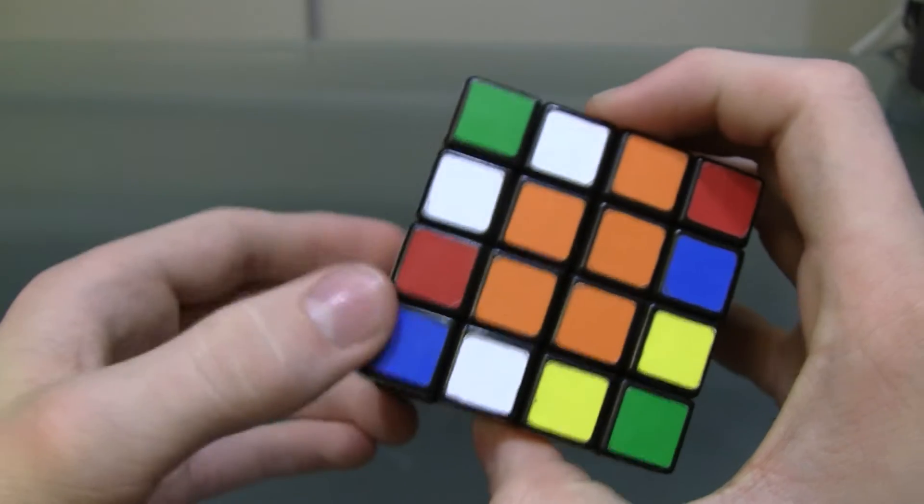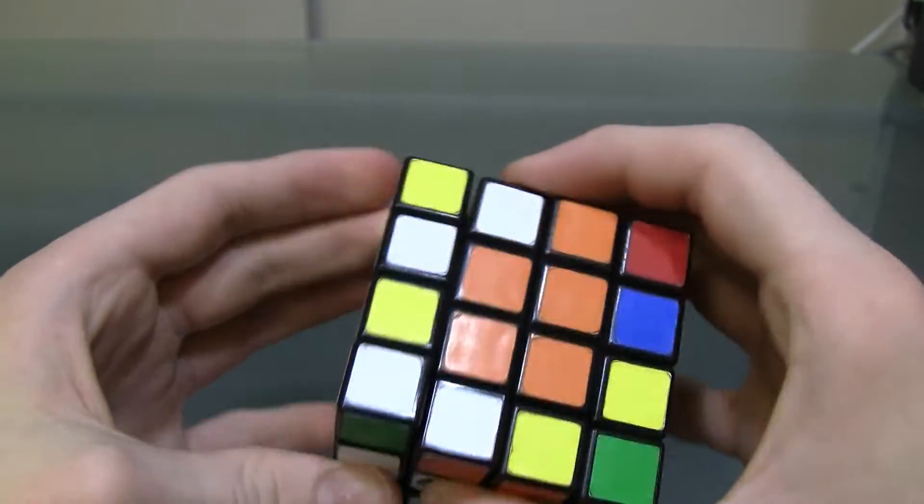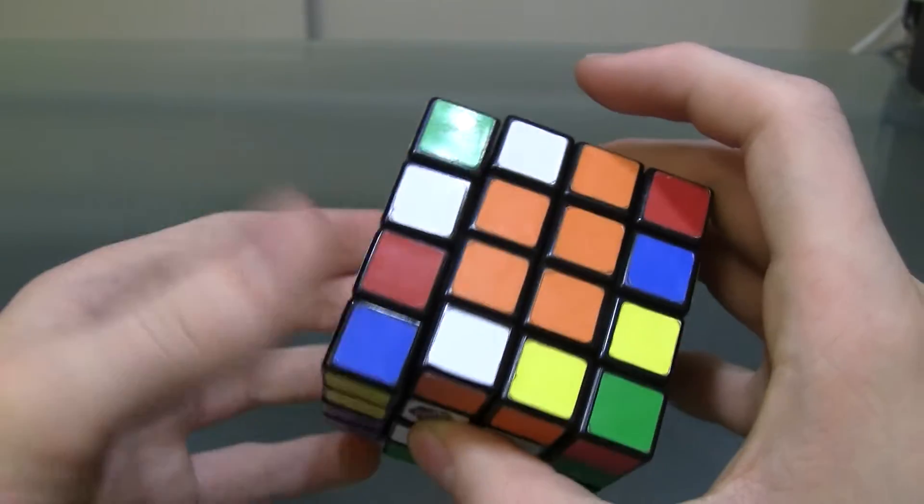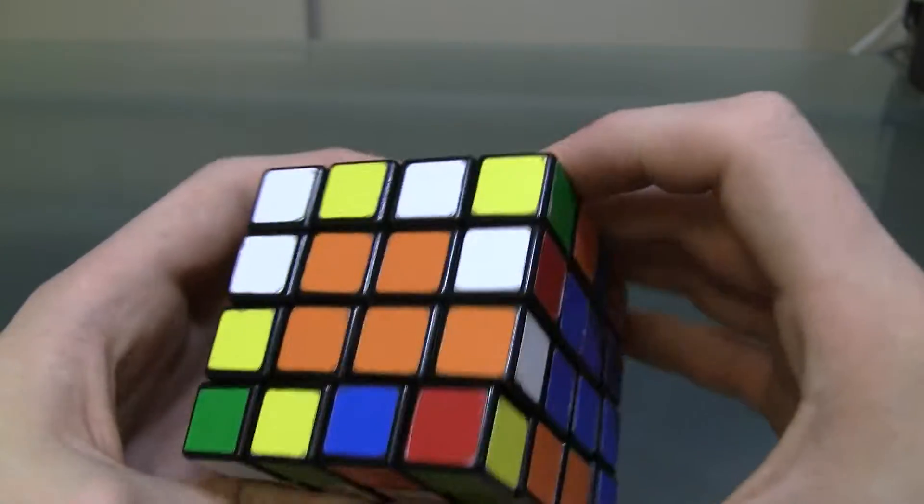So, to fix that, you need to bring this edge piece out of place. By bringing it either down... Yeah, you have to bring it down, because if you bring it up, then it's in the same layer again. So, you have to bring it down like that. And now, twist this one where it goes. Like this.